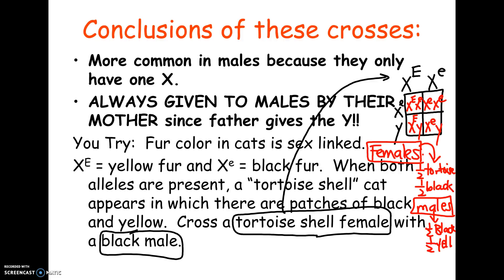Here's a sample cross to finish: we cross a tortoiseshell female with a black male. Usually on these you separate your males and females. For the females, you get half tortoiseshell and half black. For the males, you get half black and half yellow. You can't just say one-fourth tortoiseshell — you have to separate the results by sex.